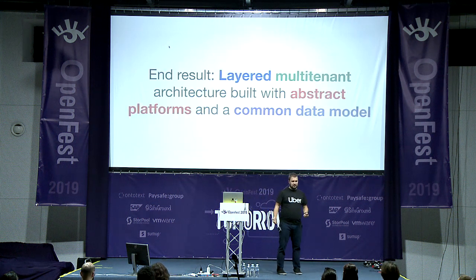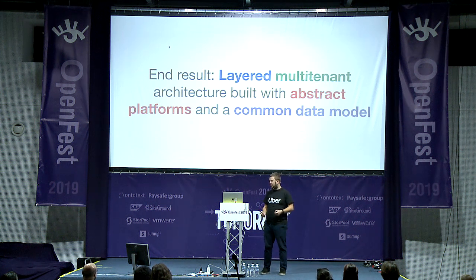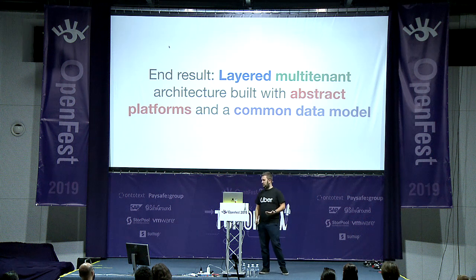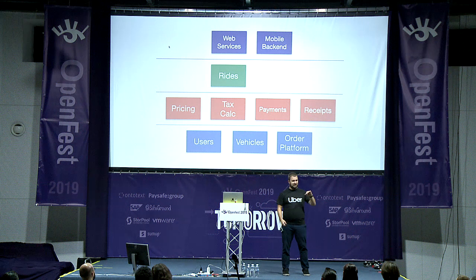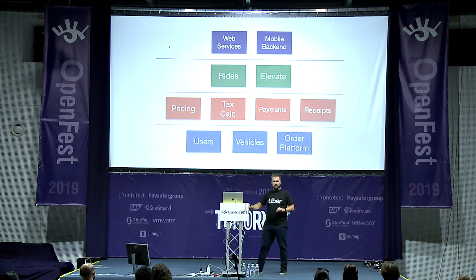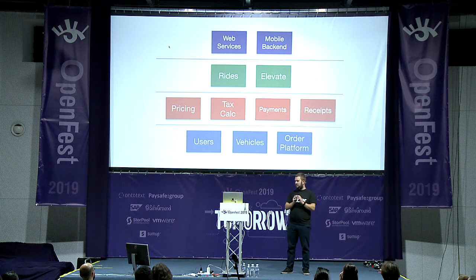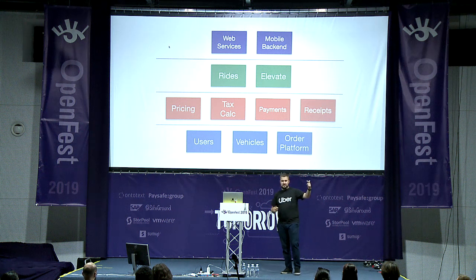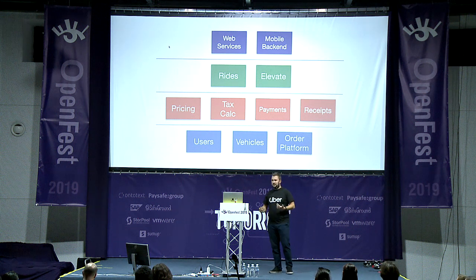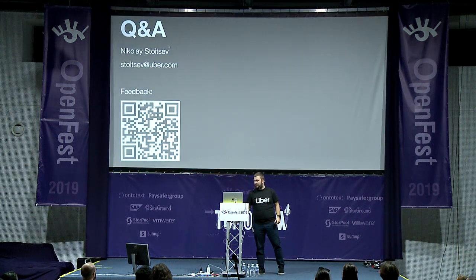To have clear layers, it's very important to have a clear API between them — whether using protobuf, Apache Thrift, or GraphQL — but you need a definition of the layers, and the API becomes more and more important. The end result: a layered architecture where it's easy to find things, it's multi-tenant, it's easy to test, it's built with abstract platforms that easily support new use cases, and it has a common data model. To add Elevate, we know we need to create one service in the LOB layer, we know how to integrate with the layers below by following the same patterns as the rides service, and the system becomes much easier to understand and change.